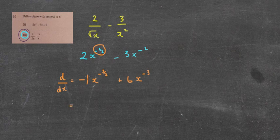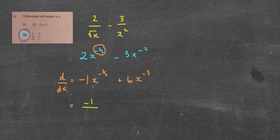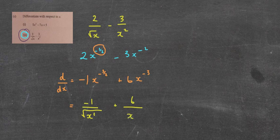That's theoretically correct. However, because the question was given to us in surd and fraction form, we want to convert back. The negative 3 over 2 works on the x only, so I've got negative 1 at the front — the negative means 1 over — and I'm left with x to the power of 3 over 2. The 2 on the bottom means it's a square root, and then it's x cubed. Then I've got plus 6 over x cubed. That is my simplified answer.